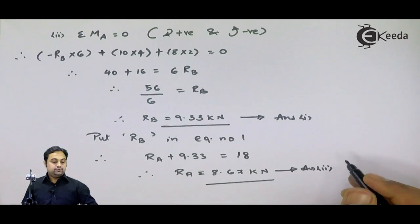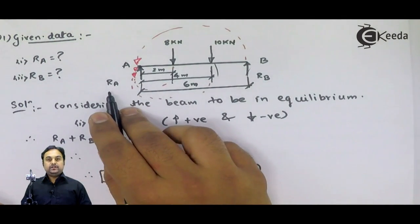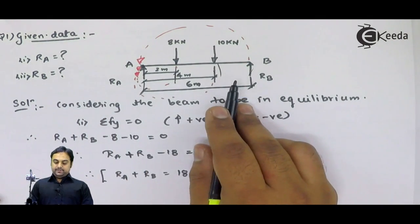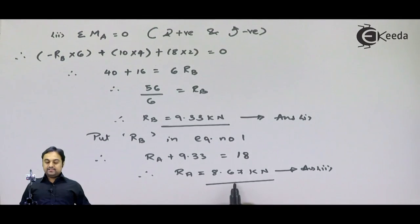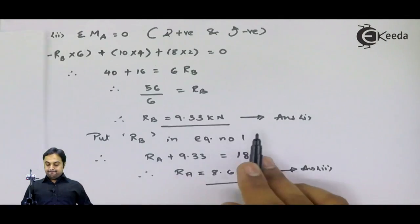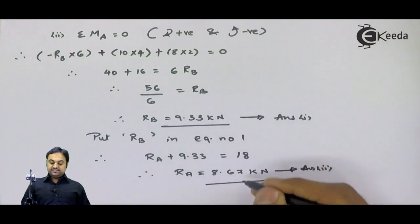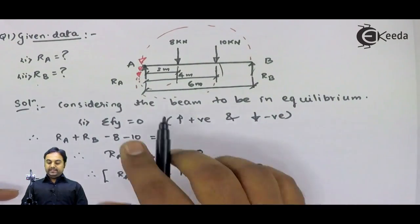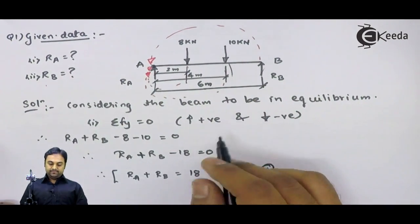So, looking at this question, we were asked to calculate the reactions offered by the supports, that is RA and RB. We have found RA equals 8.67 kilo Newton and RB equals 9.33 kilo Newton. These are the reactions offered by the simply supported ends due to the 8 kilo Newton and 10 kilo Newton loads, and for this the beam is in equilibrium.